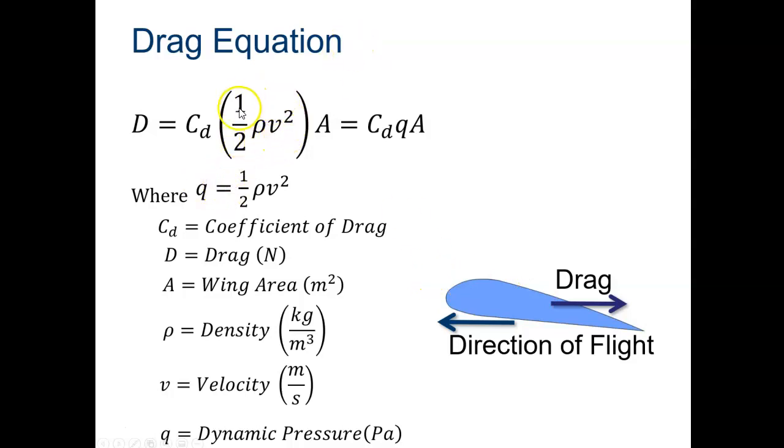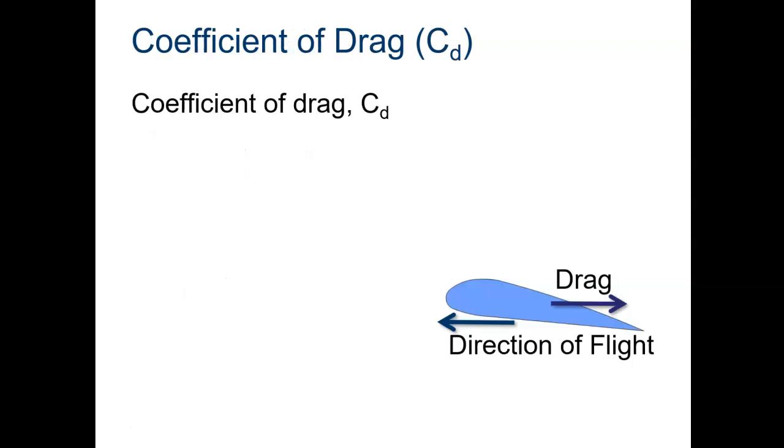So if we look at the equation for that, we see some familiar things. If you've watched the lift equation video first, you know that the quantity here, one-half ρv², is dynamic pressure. A is the area, ρ is density, and v is velocity.